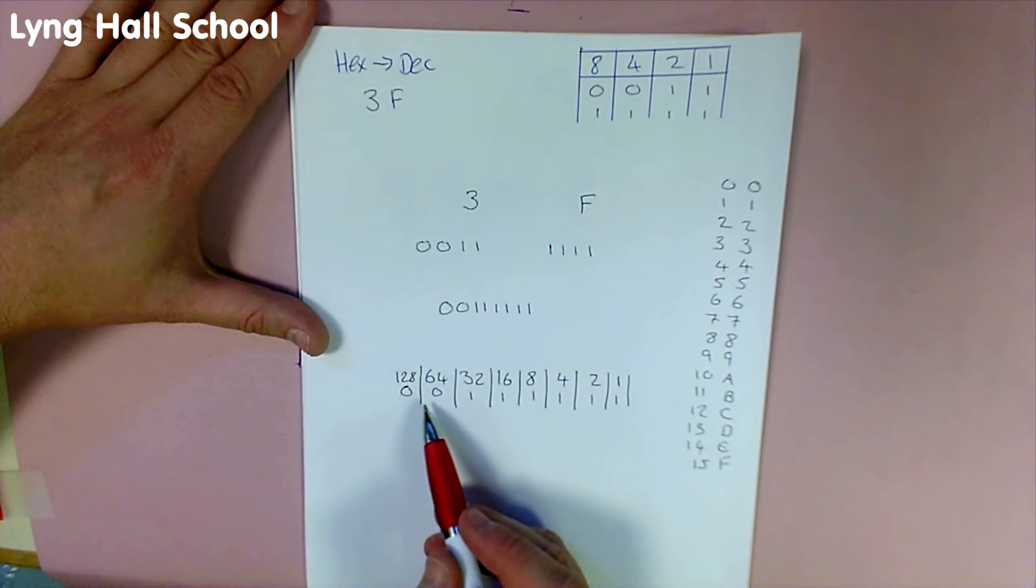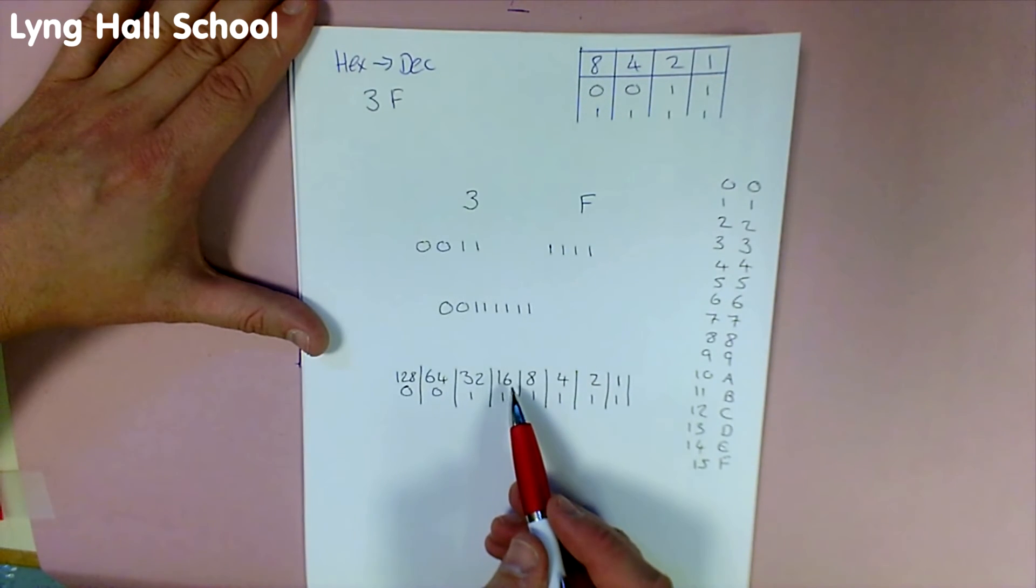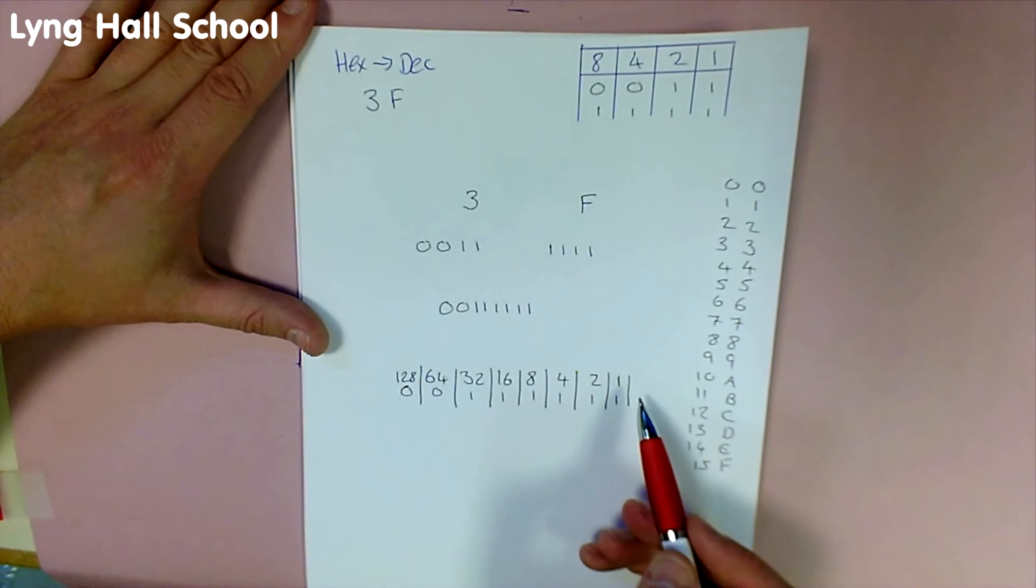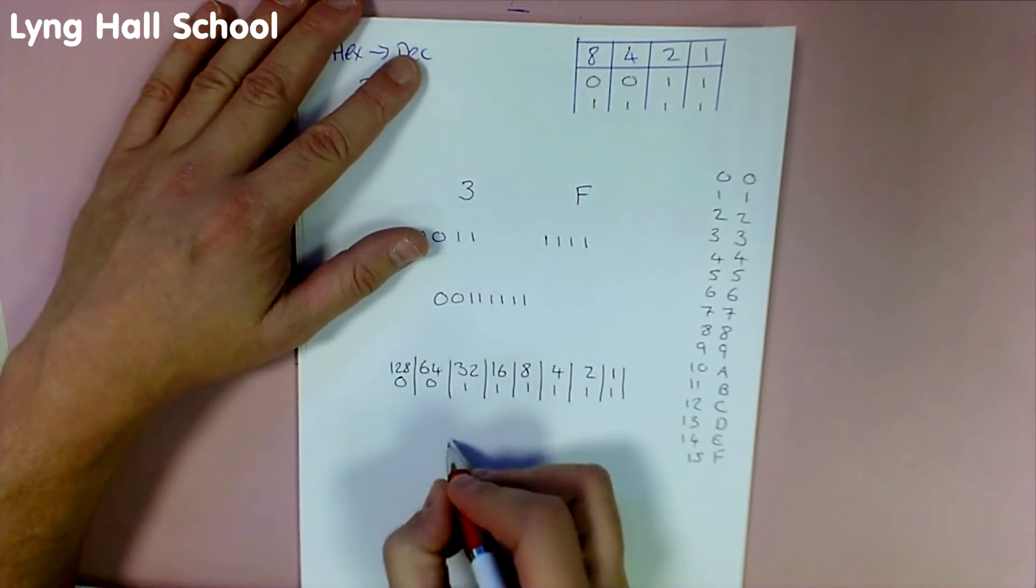We will then add up, as there's two zeros here: 32, add 16, add 8, add 4, add 2, add 1. This we can now see would be 63.